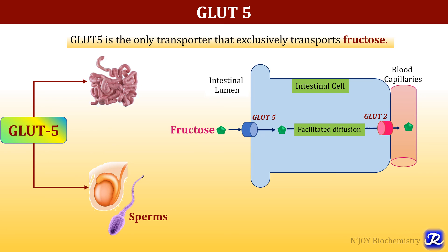GLUT 5 is the only transporter that exclusively transports fructose. It is present in the intestine and in the testis, specifically in sperms, because sperm require fructose. GLUT 5 transporters are present on the luminal side of the intestinal cell, where fructose is transported into the intestinal cell, and is later released into the circulation via GLUT 2.